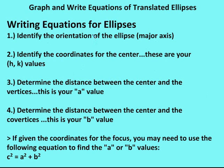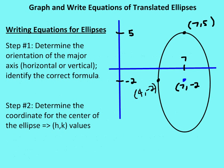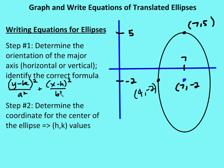There are five steps in writing equations for ellipses. Step one: determine the orientation of the major axis — horizontal or vertical — and identify the correct formula. In this case I see a vertical major axis. Since it's vertical, the a value is beneath the y variable, giving the formula: y minus k squared over a squared plus x minus h squared over b squared equals 1.